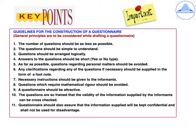The guidelines for construction of a questionnaire is an important 5-mark question. General principles: the number of questions should be as few as possible; questions should be simple to understand and arranged logically; answers should be short — yes or no type; questions regarding personal matters should be avoided; clarifications should be supplied as footnotes; necessary instructions should be given to informants; questions requiring mathematical calculation should be avoided; the questionnaire should be attractive; questions should allow cross-checking of information; and the questionnaire should assure confidentiality of the information supplied.